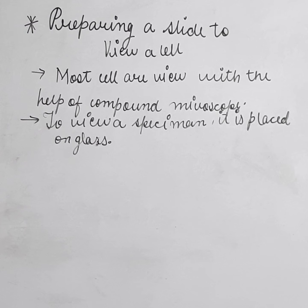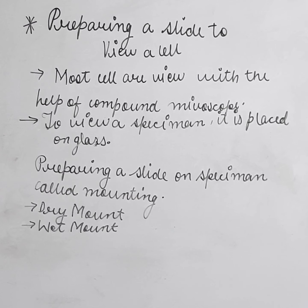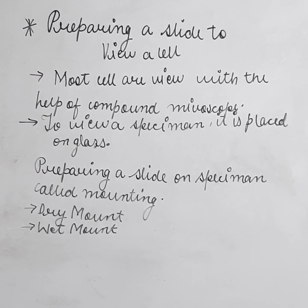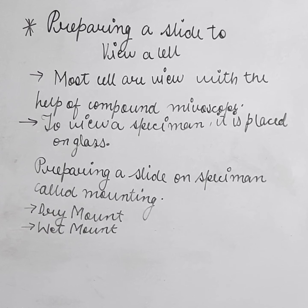There are two types of mounting: the first is wet mount and the second is dry mount. Dry mount means that water is not needed — it is very dry. Dry mount is used to see inanimate objects, meaning objects that are not alive. The term dry mount suggests it does not need water.